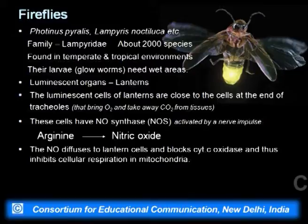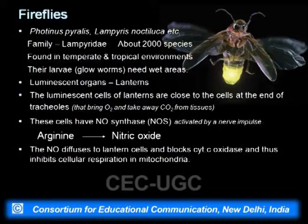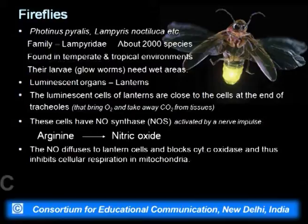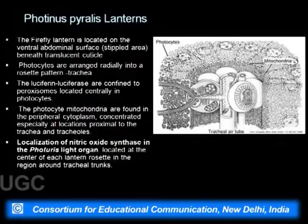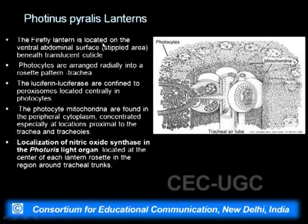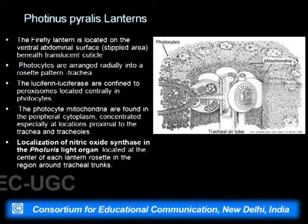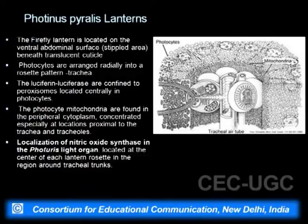Fireflies are Photinus pyralis belonging to the family Lampyridae. About 2000 species are known and they are seen across temperate and tropical regions, including India. Their larvae are called glowworms, seen as a Christmas tree phenomenon in many locations. The mechanism of bioluminescence in fireflies is located in the luminescent cells or lanterns. The firefly lantern is located on the ventral abdominal surface near the thin cuticle, and photocytes are arranged radially near the trachea.